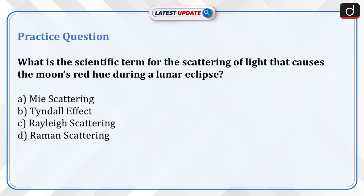Now it's time for a practice question. What is the scientific term for the scattering of light that causes the moon's red hue during a lunar eclipse? Option A: Mie scattering. Option B: Tyndall effect. Option C: Rayleigh scattering. Option D: Raman scattering.